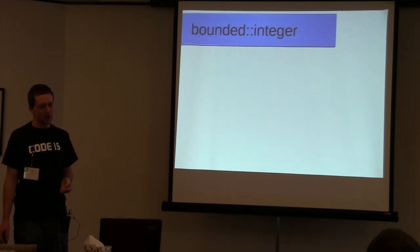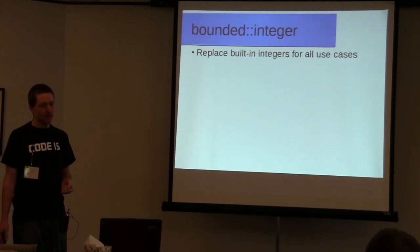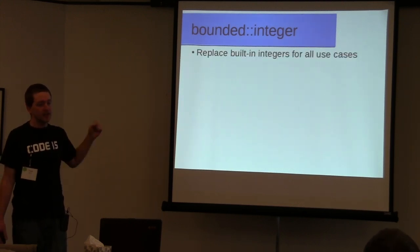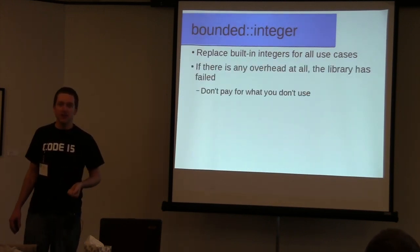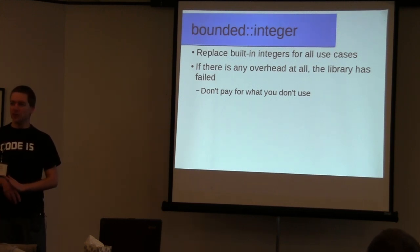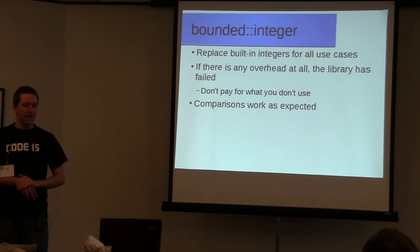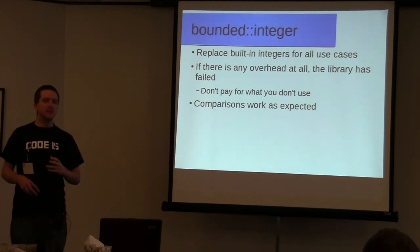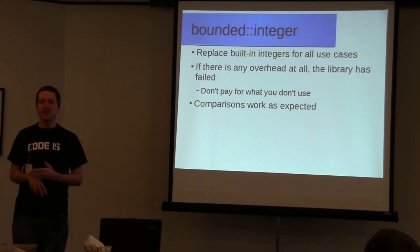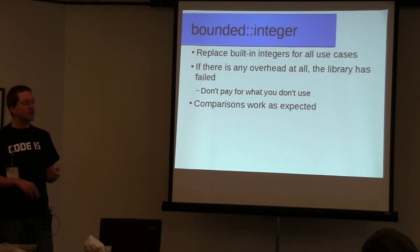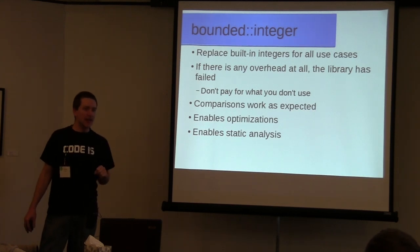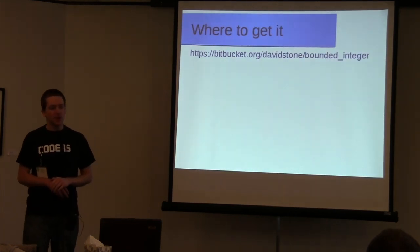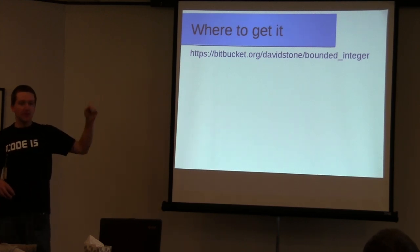So what Bounded Integer does differently — its goals — would be to replace built-in integers for all use cases. That means if there is any overhead at all, the library has failed. My goal was the zero overhead principle: you don't pay for what you don't use. It does as much checking at compile time as possible, and it allows you to opt in to any runtime checks you need. What it gets you is that comparisons work as expected, it enables certain optimizations, and it also enables static analysis.